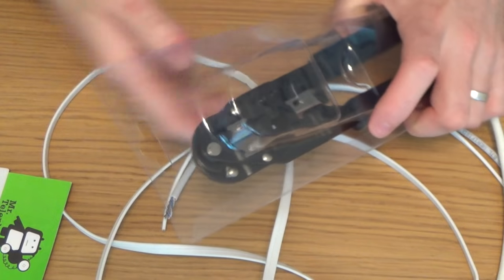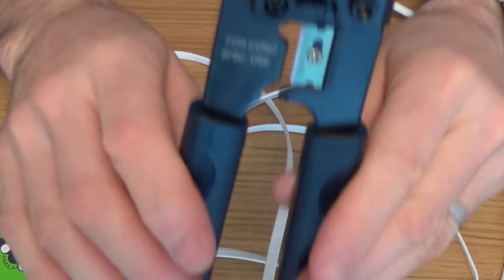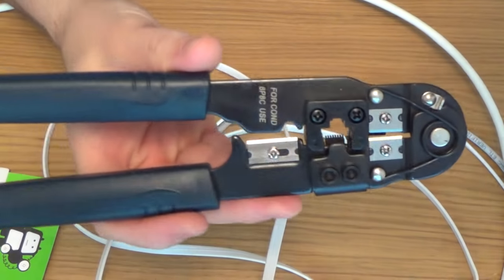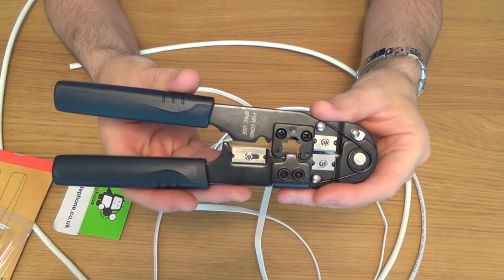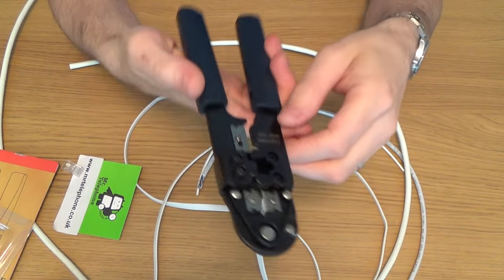So, there's some basic instructions on the back, but they're like most tools that you buy, they're not particularly clear. So, this is the crimper here. It's quite comfortable.